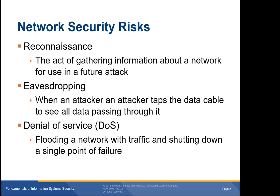Finally, denial of service attacks aim to deny you the use of your network rather than gain access to it. An attacker has two primary methods: flooding a network with traffic, or shutting down a single point of failure. A network can carry only so much data before it gets clogged and useless. In a distributed denial of service (DDoS) attack, the attacker uses many compromised systems around the world to flood the network from many different directions, making it difficult to distinguish legitimate traffic from attack traffic.